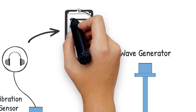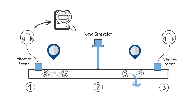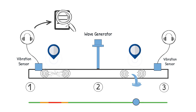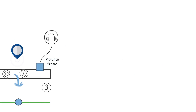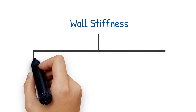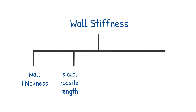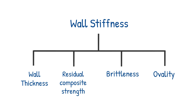Post-inspection analysis locates leaks and maps the wall stiffness along the pipeline with a typical resolution of 5 to 20 feet, or 2 to 7 meters. Wall stiffness is then interpreted to remaining wall thickness, residual composite strength, brittleness, and ovality.